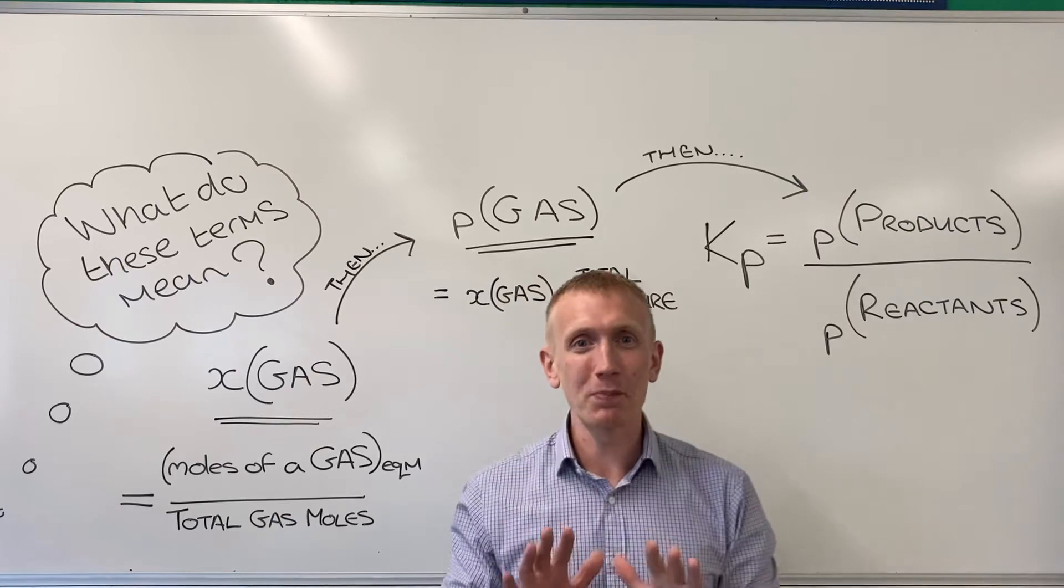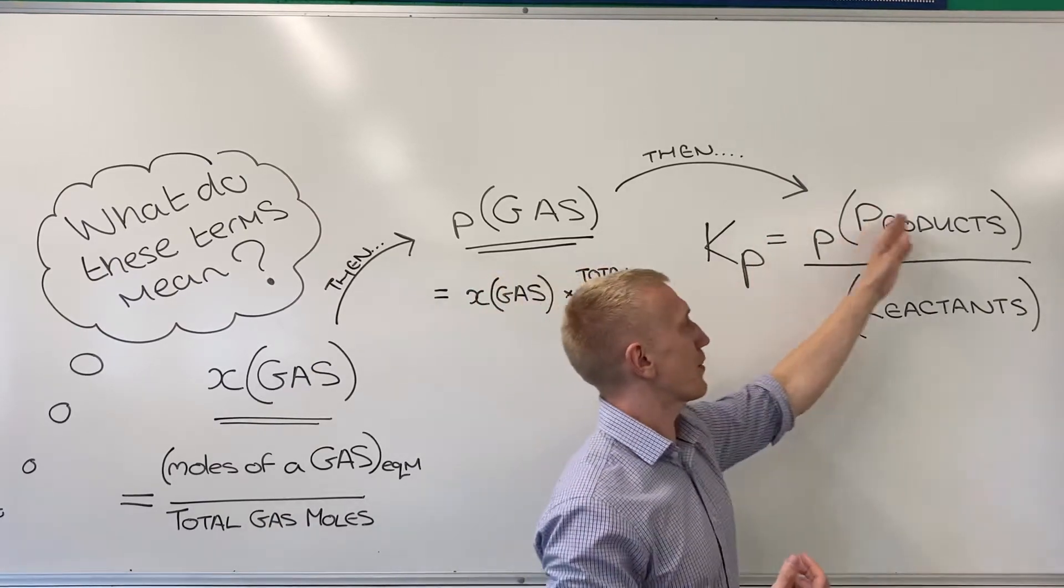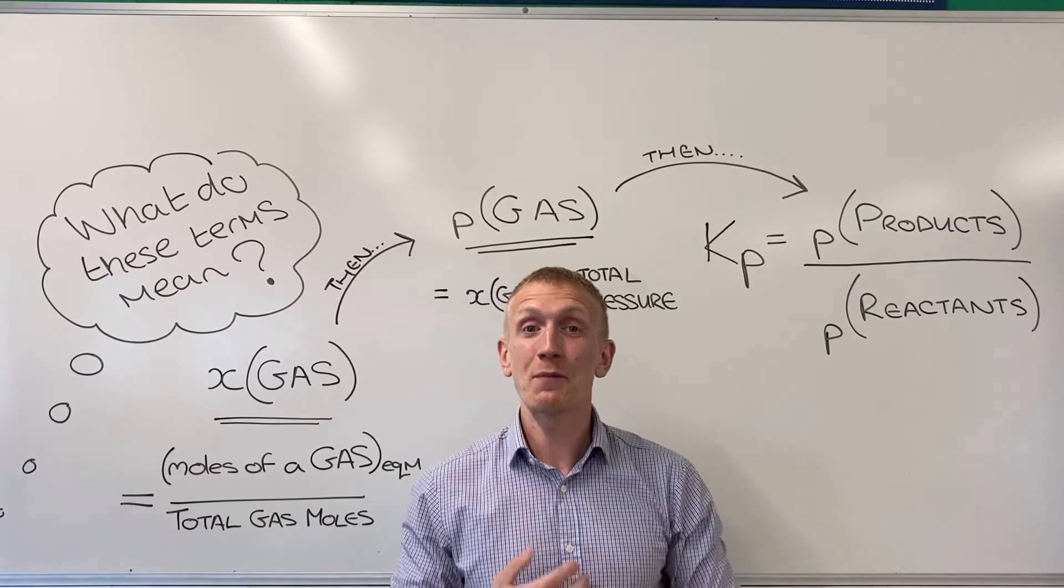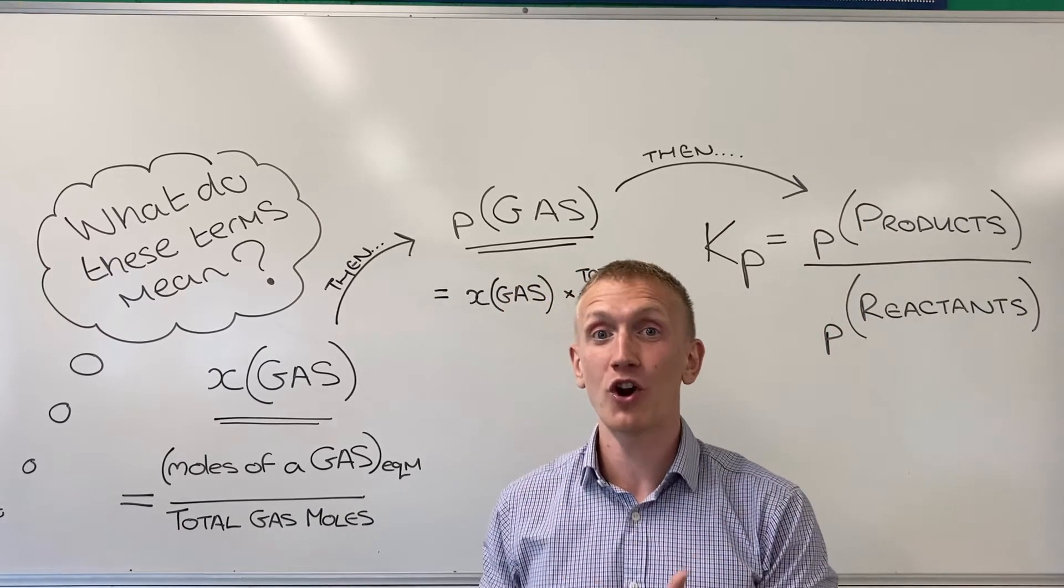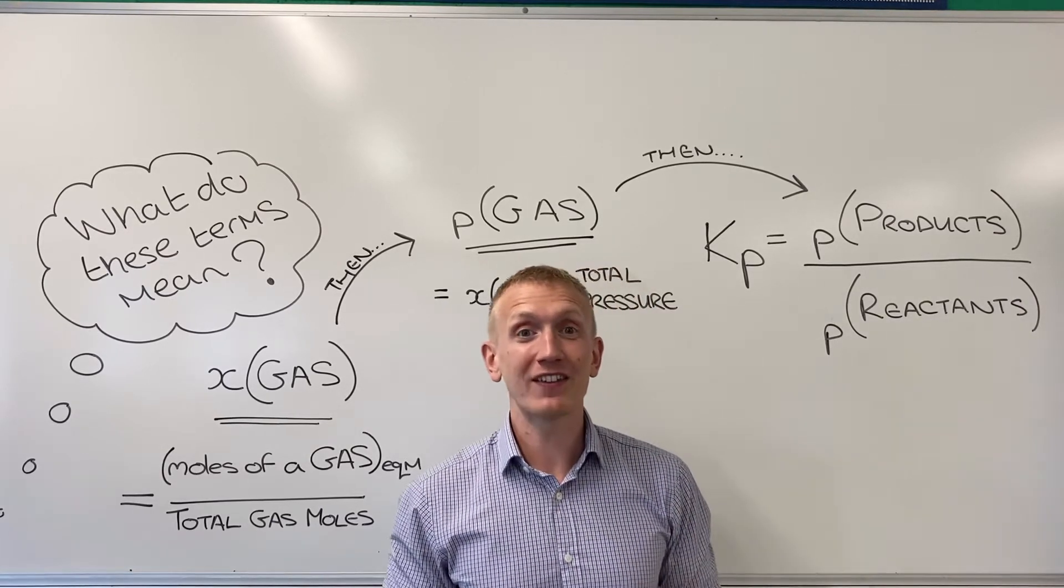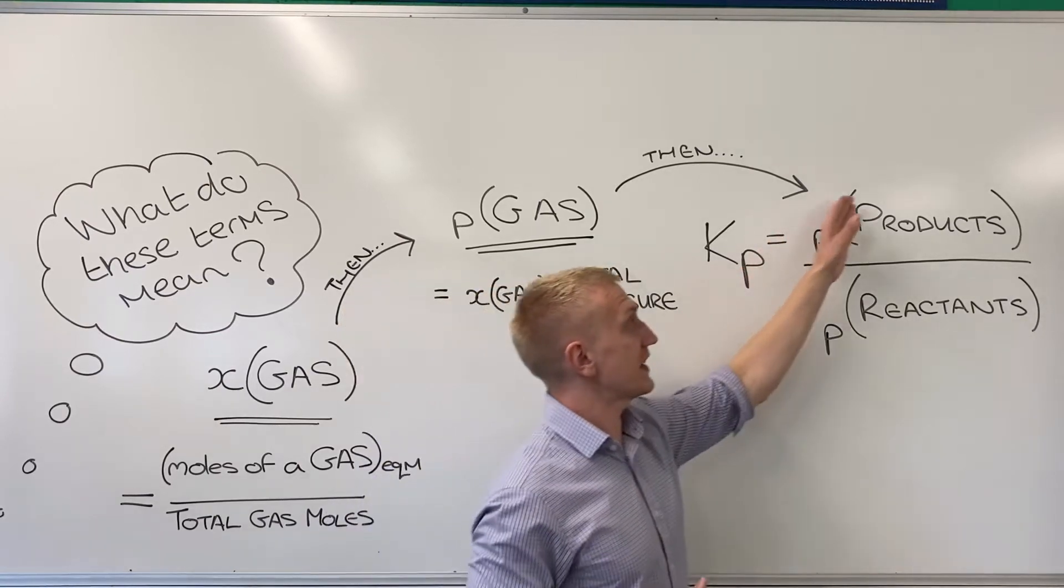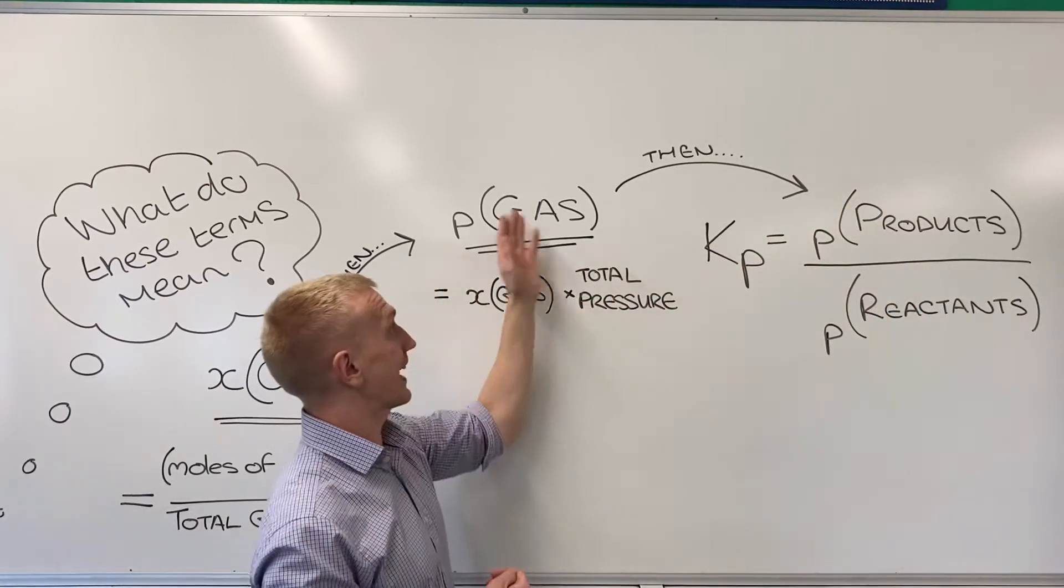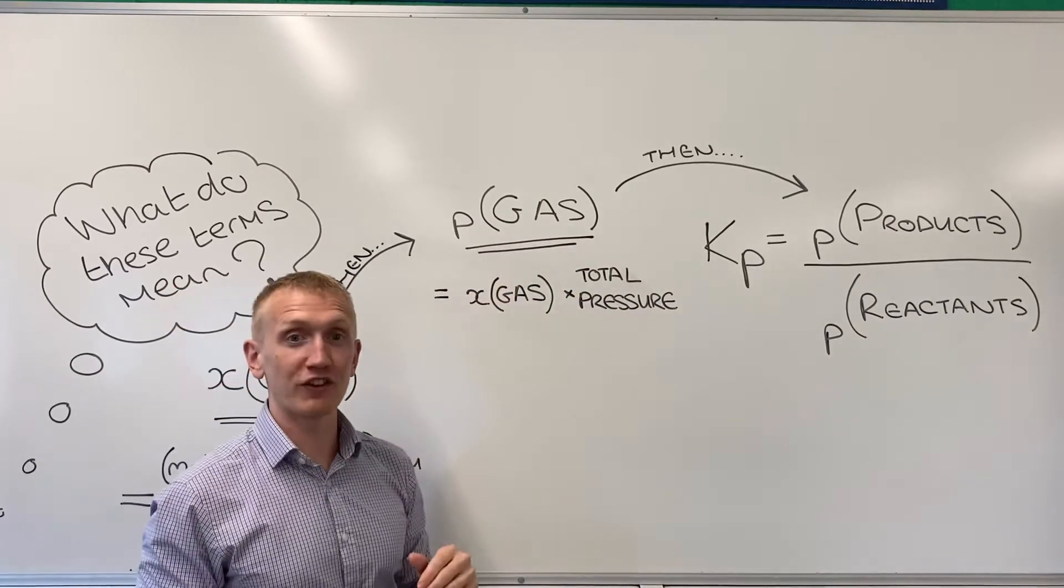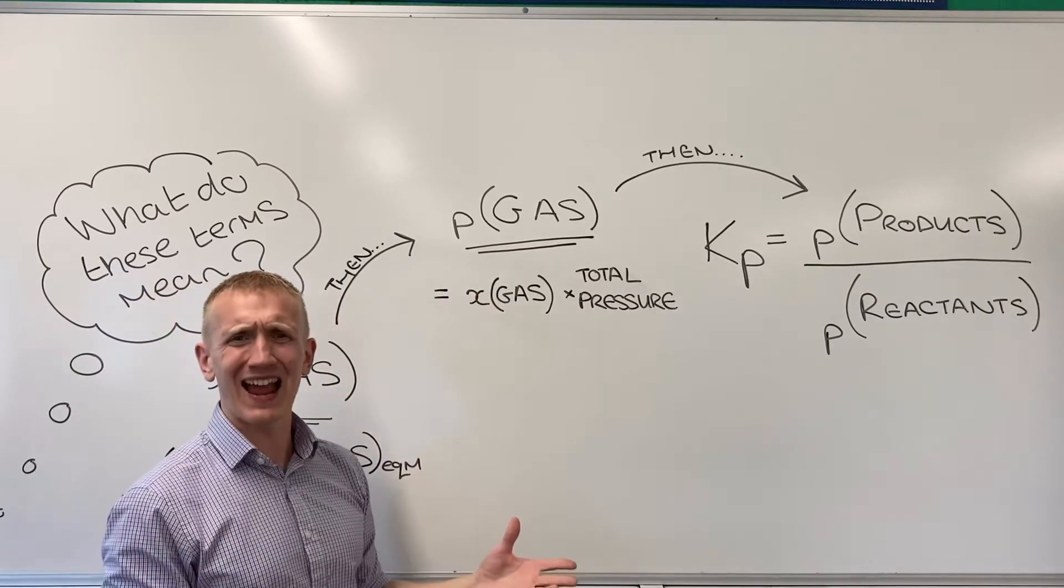The only problem is we're going to end up with pressure data that gets used in our calculation and we haven't done a massive amount of work on pressure throughout the Chemistry A level. We're going to look at a lot of new terms. We're going to look at how these are partial pressures which are calculated like so, and in order to calculate these partial pressures we're going to need the total pressure and something called the x of gas.